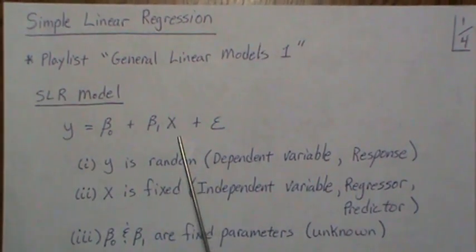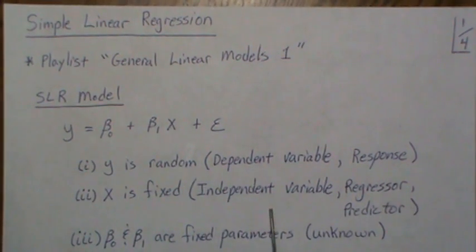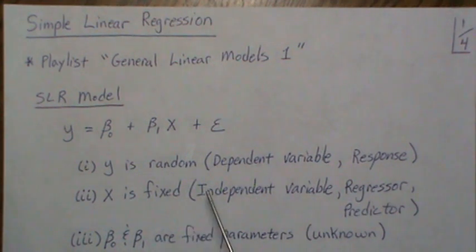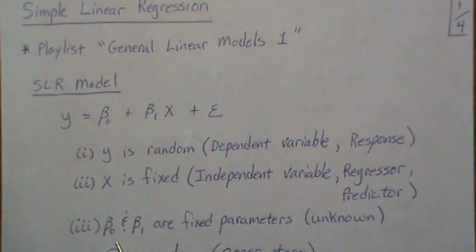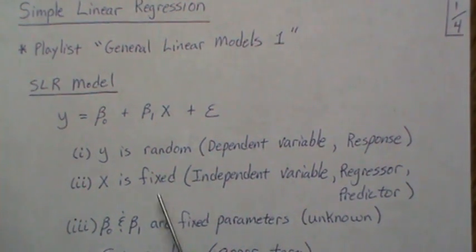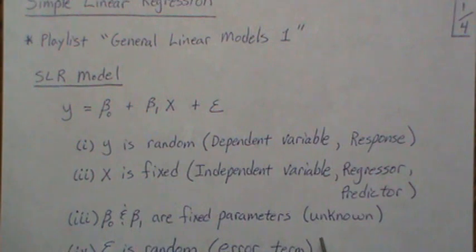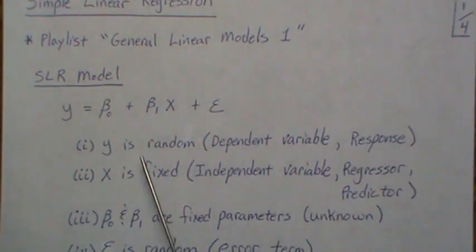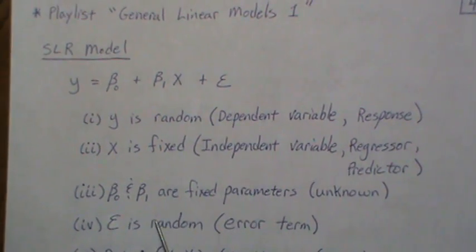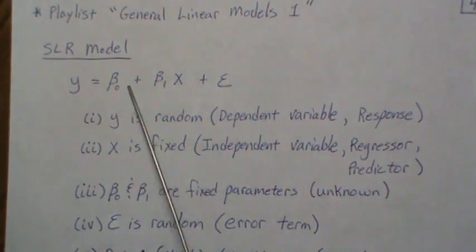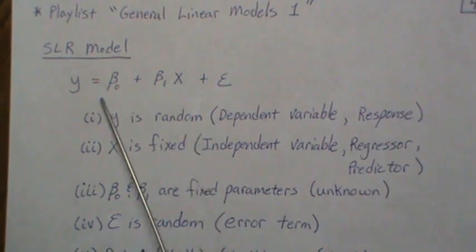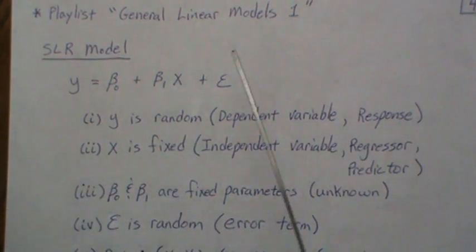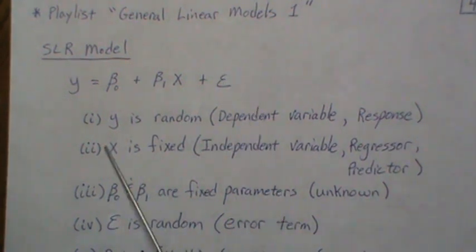Initially we're going to assume x is fixed, so it's called the independent variable — a regressor or predictor. Beta-0 and beta-1 are fixed but unknown parameters, so we don't know the relationship between x and y exactly because we don't know the population parameters. Epsilon is a random error term.